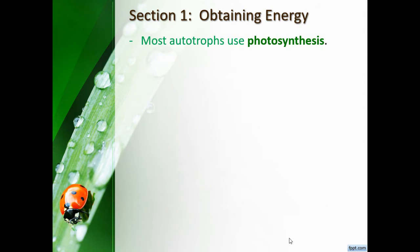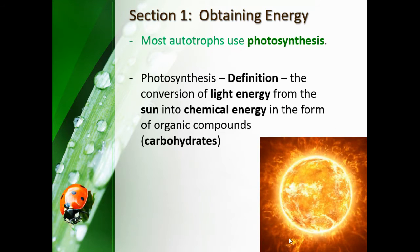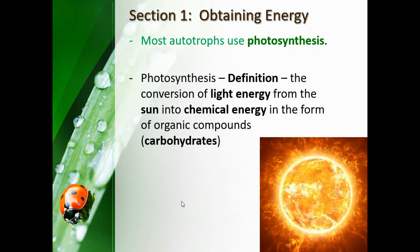This is what you're going to start writing down: most autotrophs use photosynthesis. Only pay attention to the stuff in green as far as taking notes goes. Photosynthesis is the conversion of light energy from the sun into chemical energy in the form of organic compounds, which are carbohydrates — we get glucose from plants.